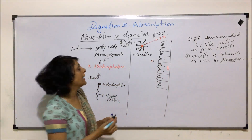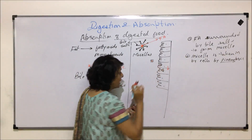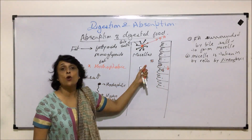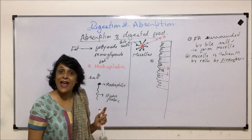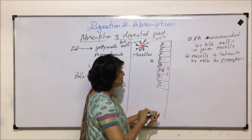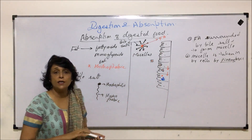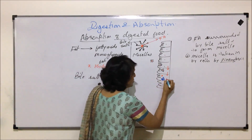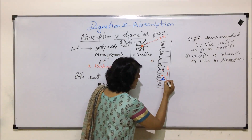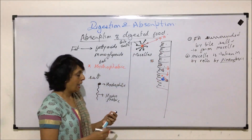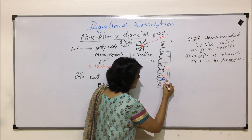The next stage we draw in the next cell. So this micelle is now inside the cell. Inside the cell the bile salts are removed. This is the next stage — salts are removed — and then the Golgi complex, the Golgi body, deposits a layer of protein around it.